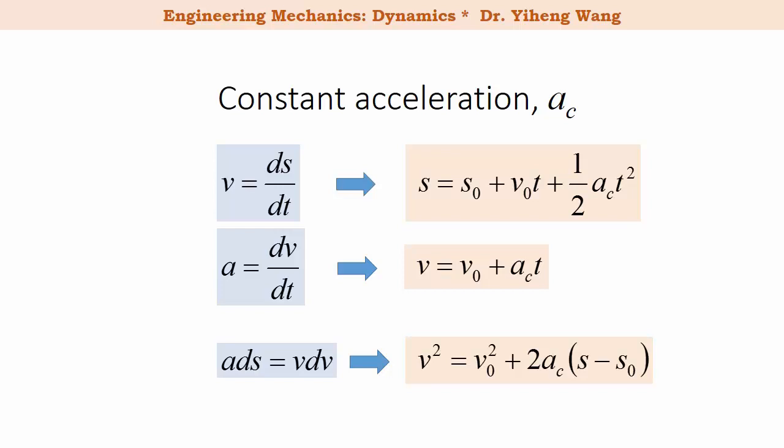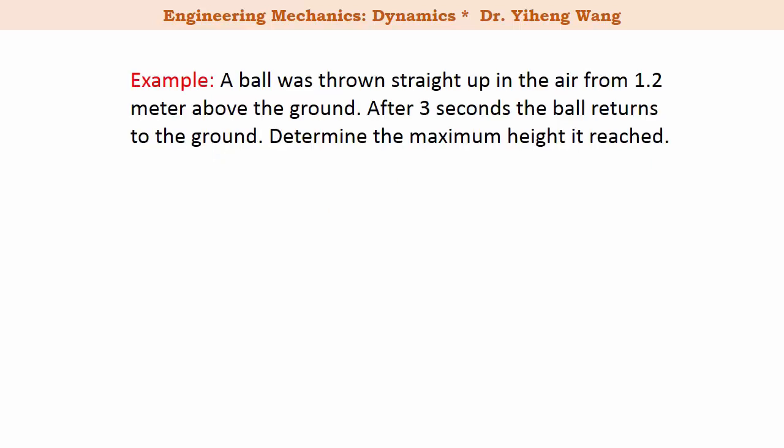Now let's look at an example. In this example, a ball was initially at a position 1.2 meters above the ground and it is being thrown straight up in the air. And it returns to the ground after three seconds. We need to determine the maximum height it has reached.